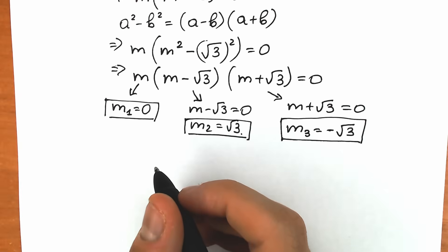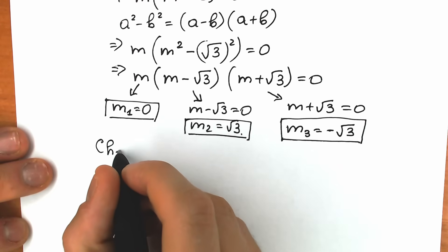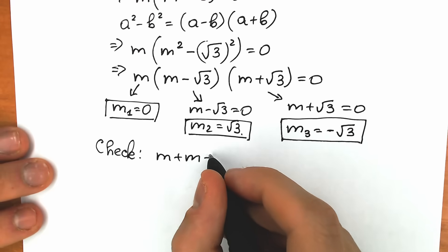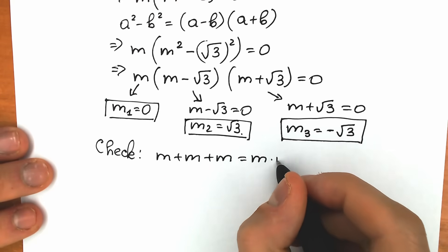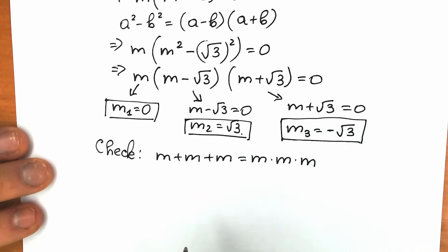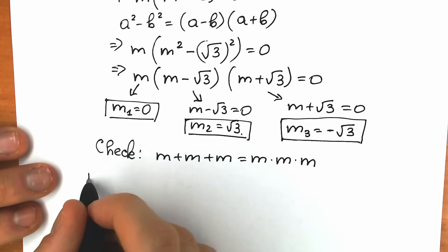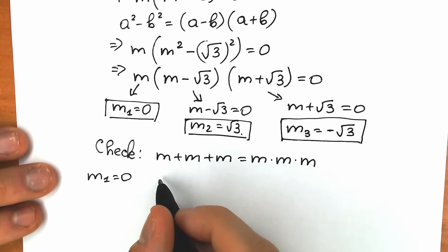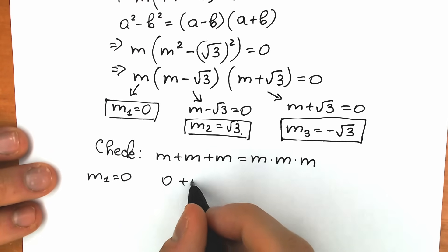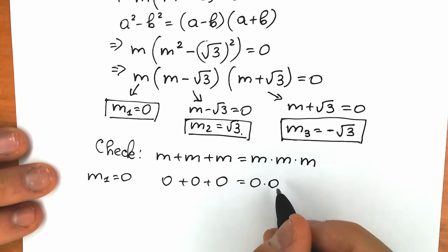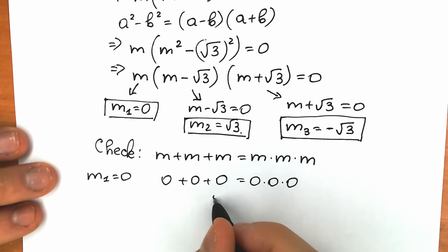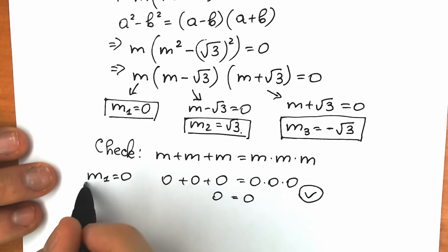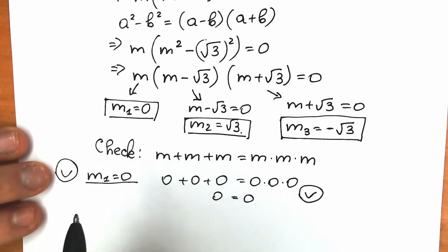Let's rewrite the original equation: m plus m plus m equals m times m times m, and check each root. First, m₁ equals zero: 0 plus 0 plus 0 equals 0 times 0 times 0 — that's 0 on the left and 0 on the right. Absolutely correct. m₁ equals zero is a valid root.